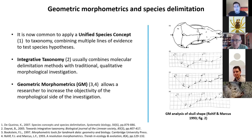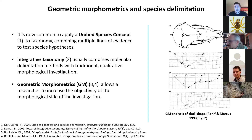What I found this method could do is: if you have a particular feature that you know is taxonomically informative but has a lot of subtle variation, you can really tease apart the intra- and interspecific variation and visualize that variation in a way that you can't match looking at specimens one at a time. That's what I want to show with this talk.